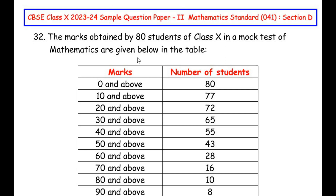Hello and welcome to my channel. In this video we are going to solve the 30th question from CBSE Class 10 2023-24 sample question paper set 2 for mathematics standard with subject code 041, section D, where each question is of five marks. This question is from the statistics chapter and it has an OR question as well, which we will be discussing in the same video.